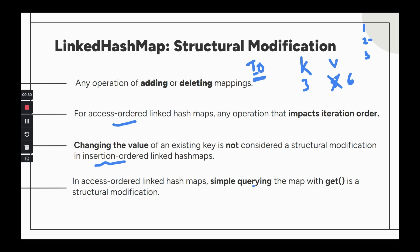For access-ordered maps, simply querying with a get() is a structural modification. Changing the value of a key also counts as structural modification in an access-ordered map. In insertion-ordered maps, these don't matter — once an entry is added, changing its value doesn't affect the insertion order. This distinction is critical specifically for access-ordered maps.